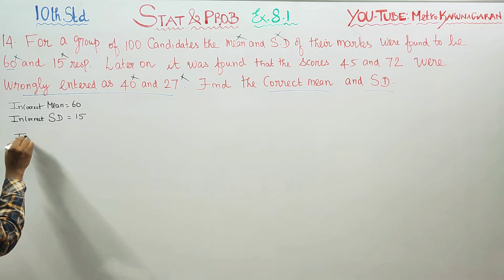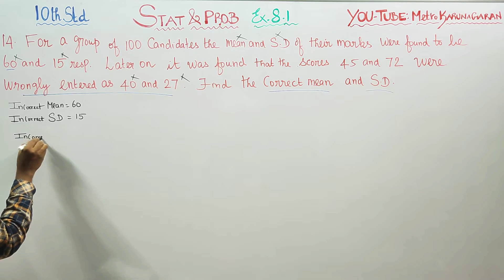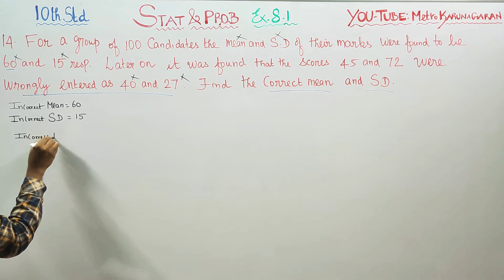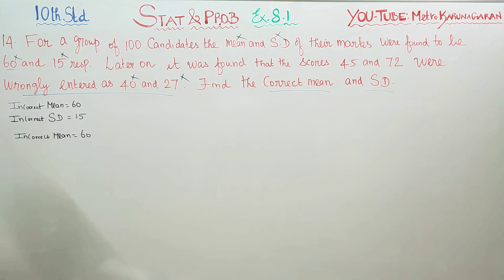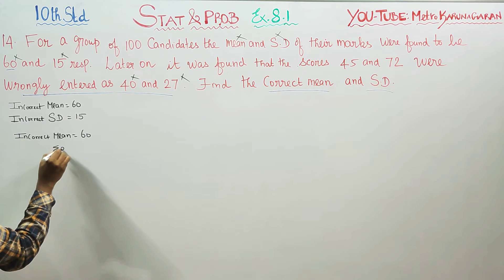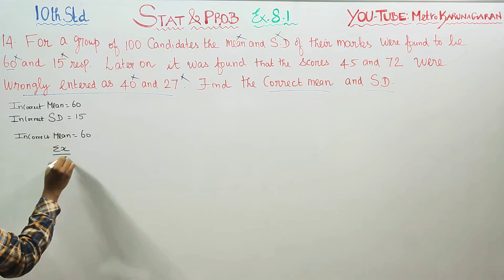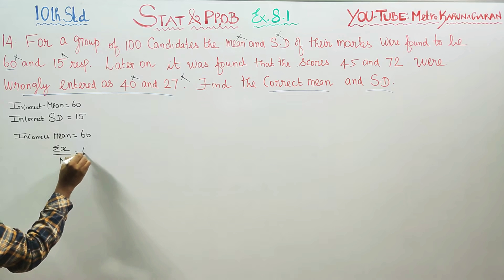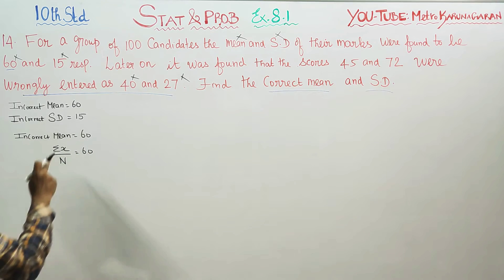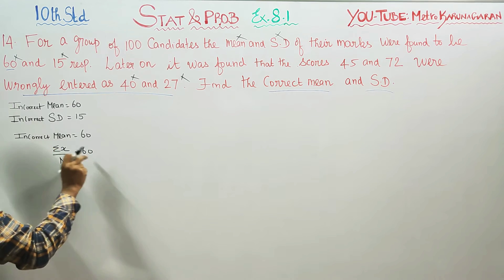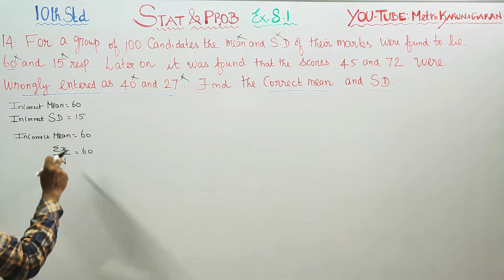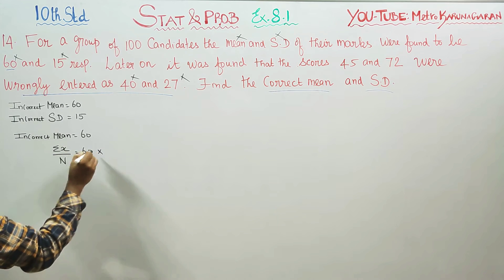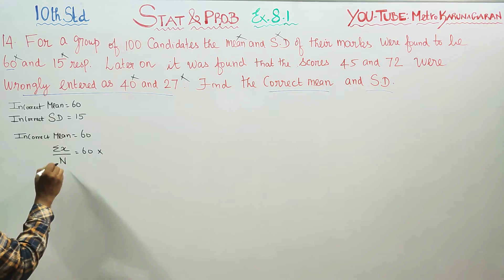The incorrect mean is equal to 60. Using the formula: mean equals Sigma X by N, so incorrect Sigma X by N equals 60. Therefore the incorrect total sum is 6000, since N equals 100.